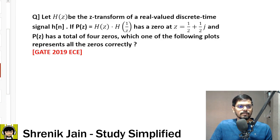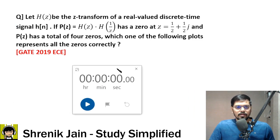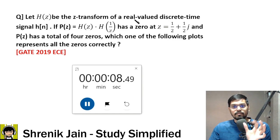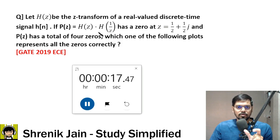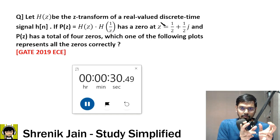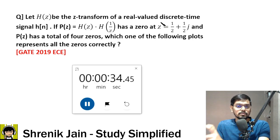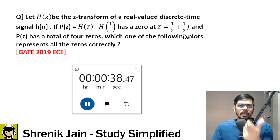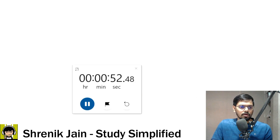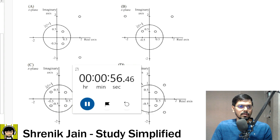Next question from Z-transform, Gate 2019 Telecommunication, MCQ. Let H(Z) be the Z-transform of a real-valued discrete time signal H(N) — 'real-valued' is very important. P(Z) = H(Z)·H(1/Z) has a zero at a complex position. When you have real-valued signals, zeros are real or come in complex conjugate pairs. P(Z) has a total of four zeros. Which of the following plots represents all the zeros correctly — A, B, C, or D?